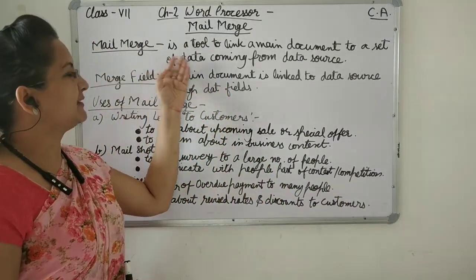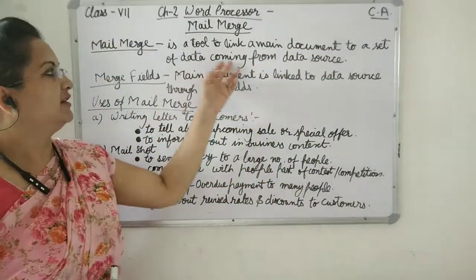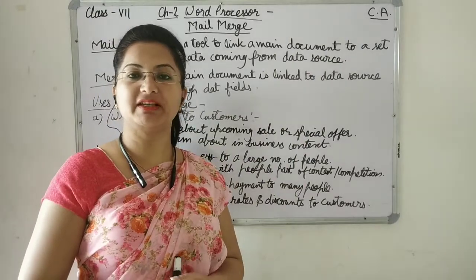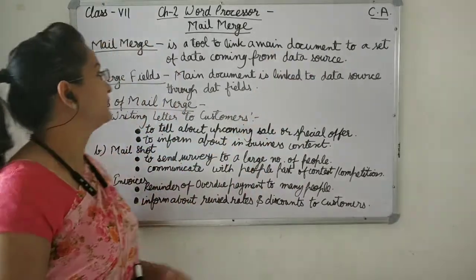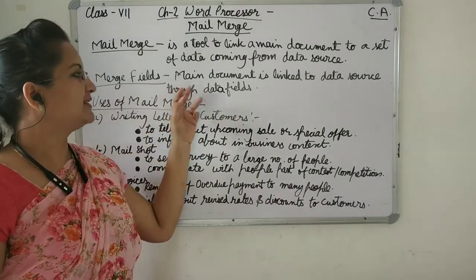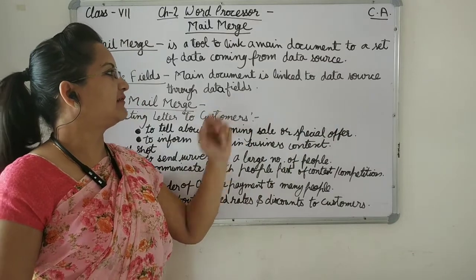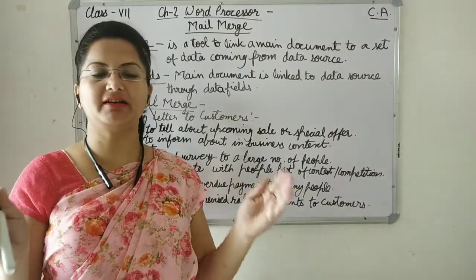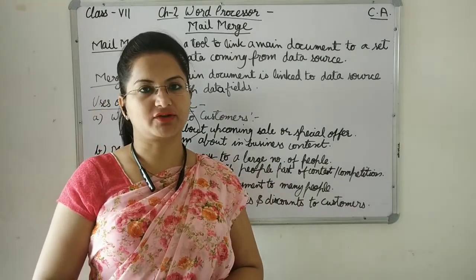Mail Merge is simply a tool that will link the main document to the data coming from the data source. Merge Field means the main document is linked to the data source through data fields — using Merge Field, we can link both the main document and the data source.